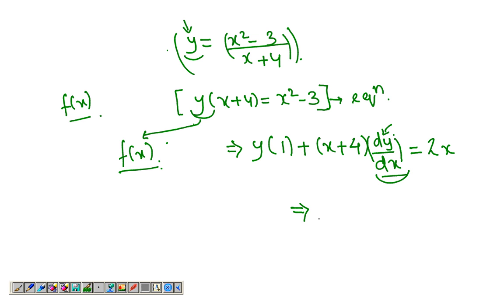And now dy over dx times x plus 4 equals 2x minus y. So dy over dx equals to 2x minus y over x plus 4.